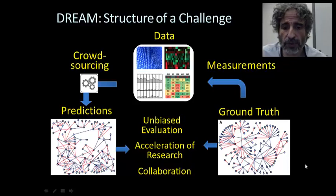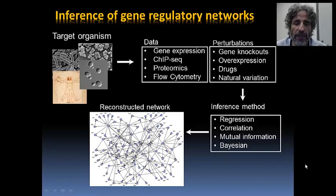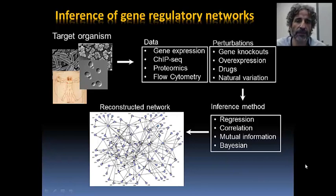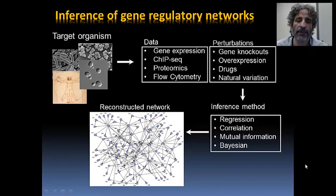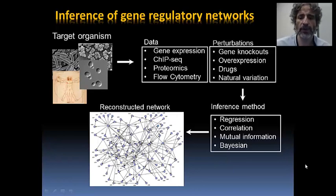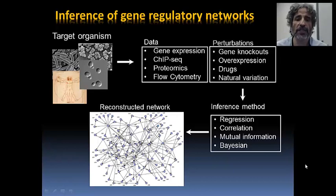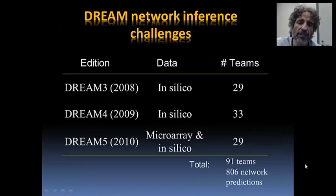Typically, you have a target organism or cell type — usually an intracellular biological system. You get data such as gene expression, ChIP-seq, proteomics, or flow cytometry, and you do perturbations to your system that are picked up by that data. The different data modalities are harnessed in some methodological framework — if you are a statistician, probably regression, mutual information, correlation, or Bayesian inference — and you have your final result: your reconstructed network.